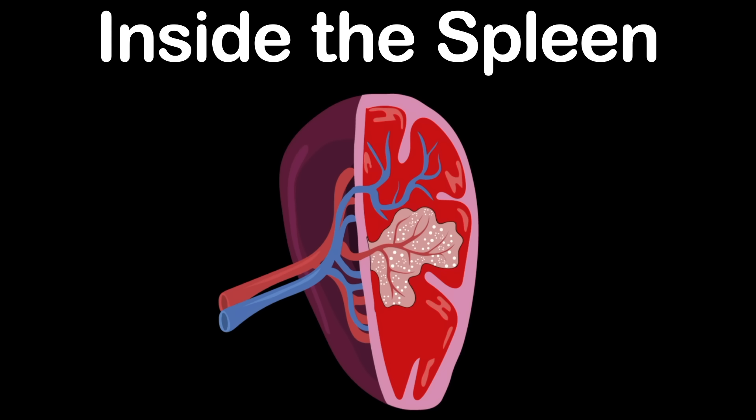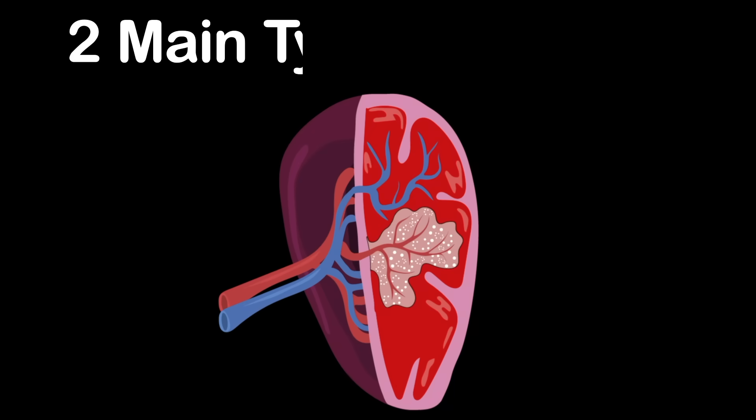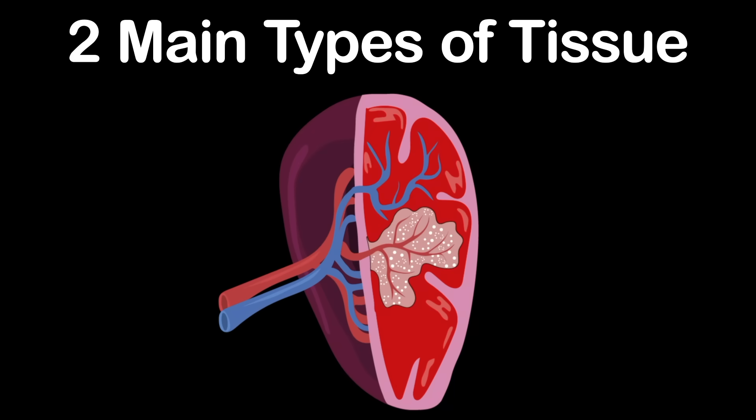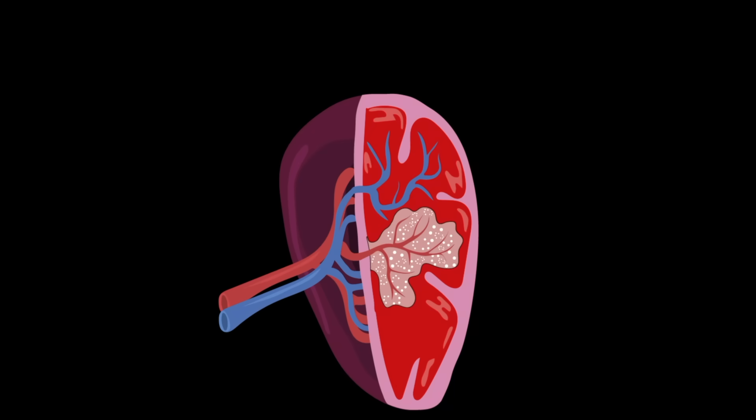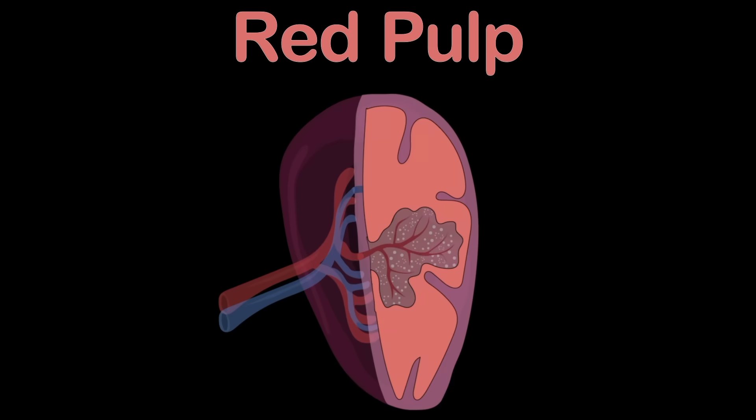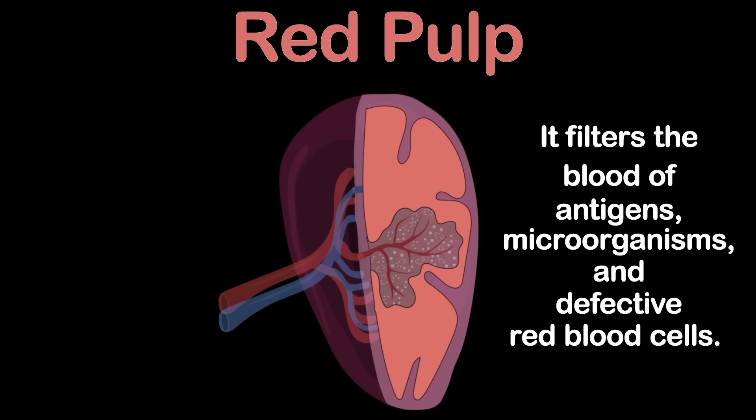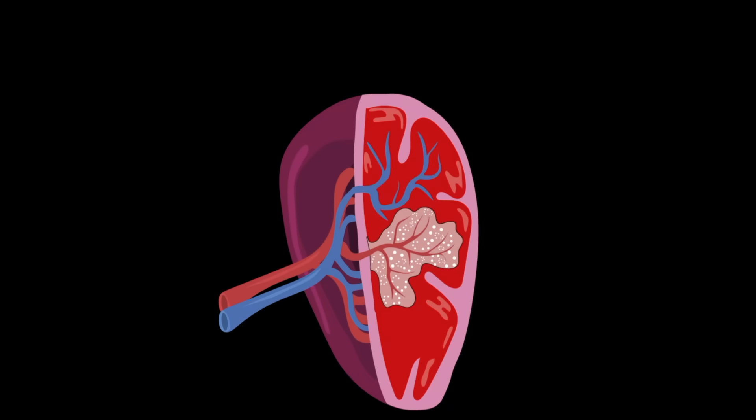Let's take a look inside the spleen to learn more of its parts. There are two main types of tissue in me, and that's where we'll start. The first main tissue is called the red pulp. It filters blood of antigens, microorganisms, and defective red blood cells.